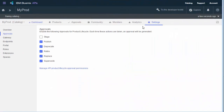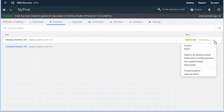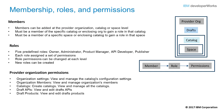The approvals required for each lifecycle stage are set at the catalog level with these catalog-level settings. Here you see an example of the various lifecycle stages that are available to products that have already been published in a catalog. API Connect uses membership roles and permissions to control who can do what within API Connect. There are members, there are roles, and there are provider organization permissions. Each member has a role assigned, and each role has a set of permissions assigned. The API Connect administrator decides what members can be added, what roles they have, and what permissions each role has.